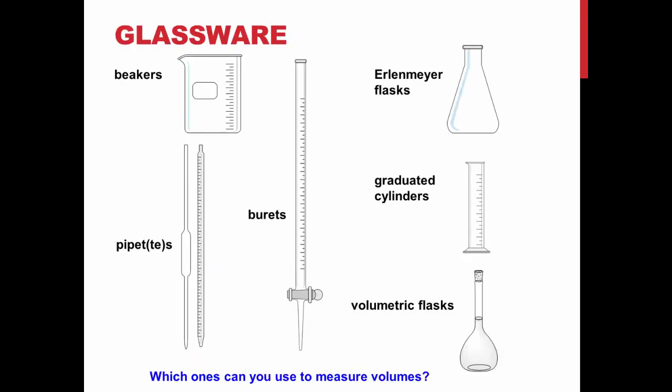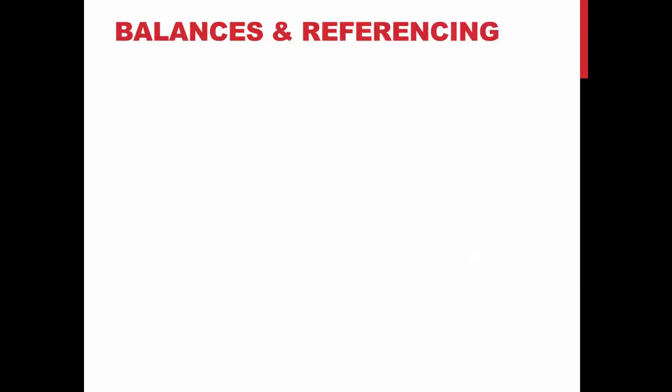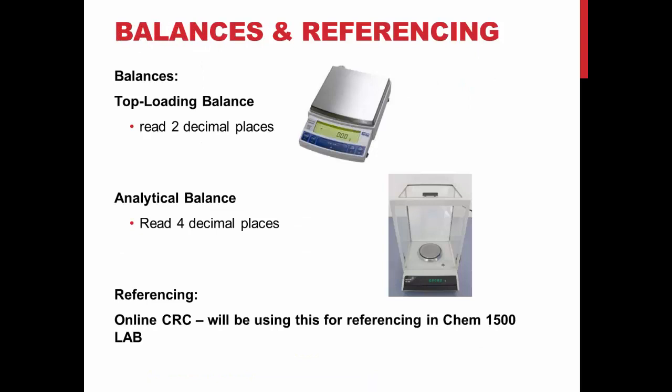There are many types of glassware you will encounter in the lab, including beakers, burets, Erlenmeyer flasks, pipettes, graduated cylinders, and volumetric flasks. You should only measure volumes with volumetric glassware — beakers and Erlenmeyer flasks are not considered to be volumetric glassware. There are two types of balances: the top-loading balance, that reads to two decimal places, and the analytical balance, that reads to four decimal places. When referencing in this course, you should be using the online CRC.